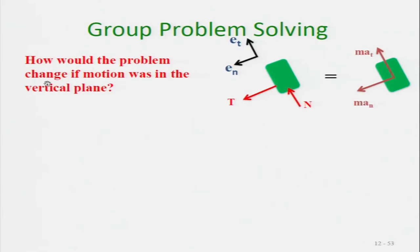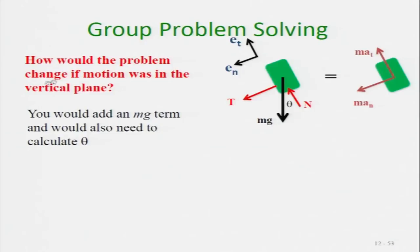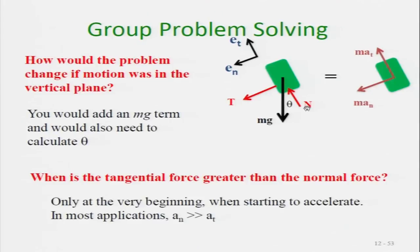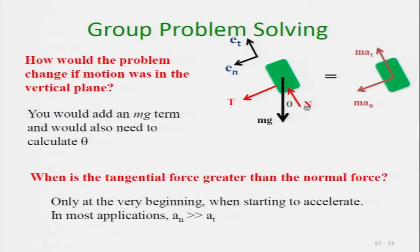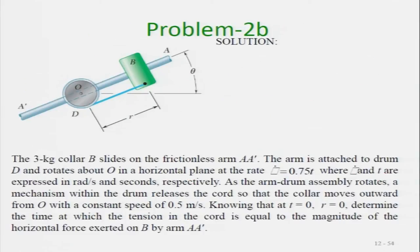The second part of the question asks how the motion would change if it were in the vertical plane instead of the horizontal plane. The only change is that we also need to apply the mg component. The mg will have one component along the tangential direction and another along the normal direction, and we proceed accordingly.